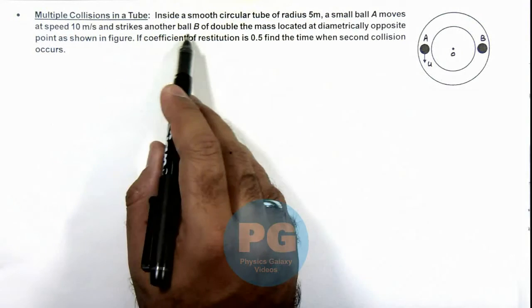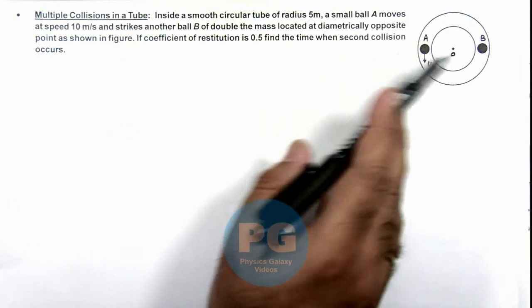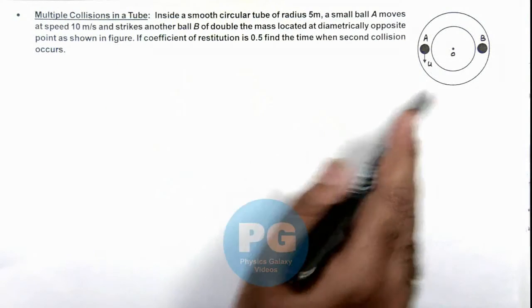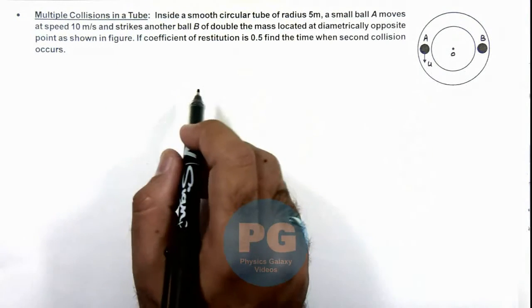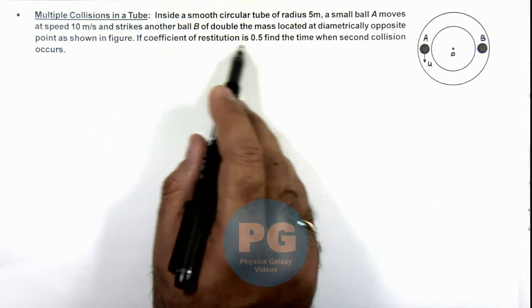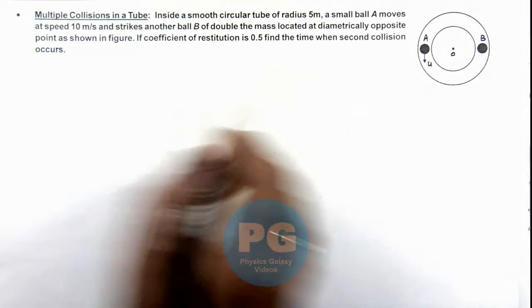Ball A strikes another ball B of double the mass located at diametrically opposite point as shown in the figure. Here we are looking at the top view of the tube placed on a horizontal ground. If coefficient of restitution is 0.5, we are required to find the time when the second collision occurs.